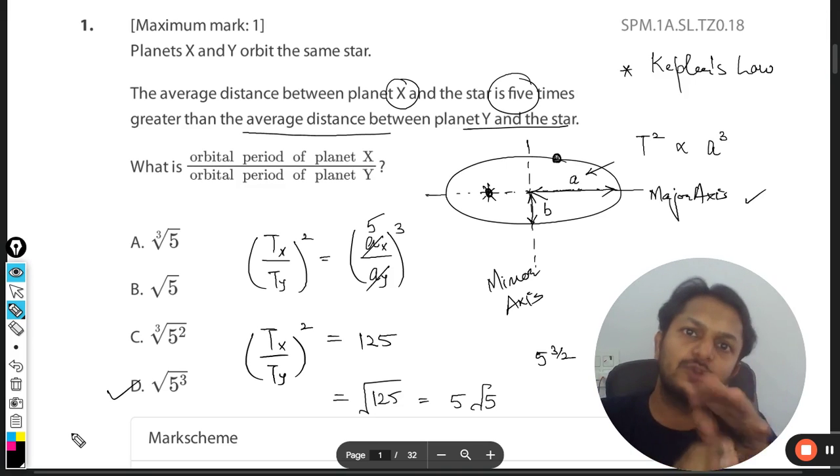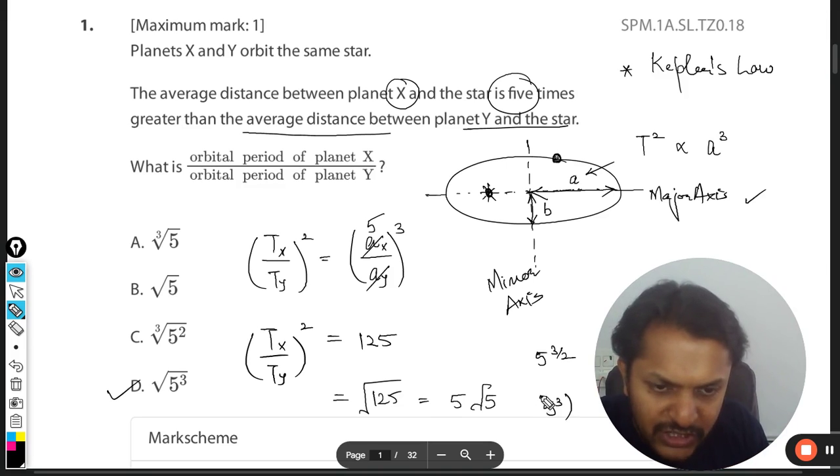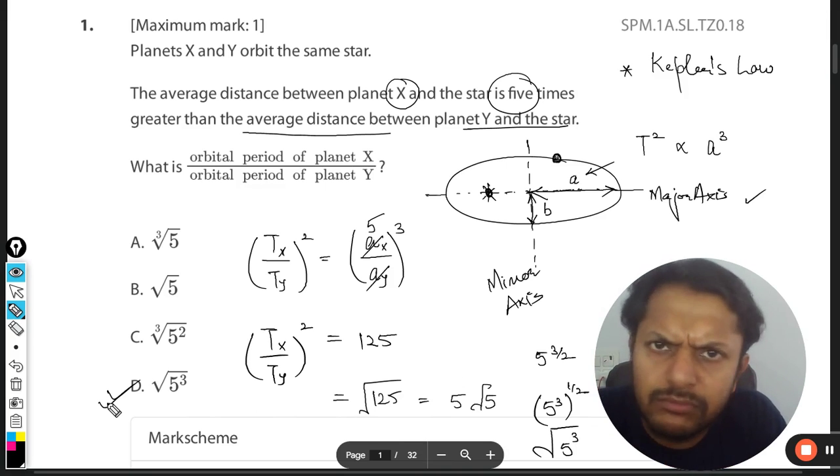What we can say is 125 can be written as 5³, and then the square root is there. So it is 5 raised to power 3/2. So D will be the correct answer. One by two is written as the square root and 5³ is like 5³. This can be written as cube root square root of 5³. This is what they have done, and the answer for this question will be D.